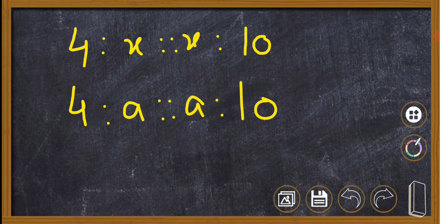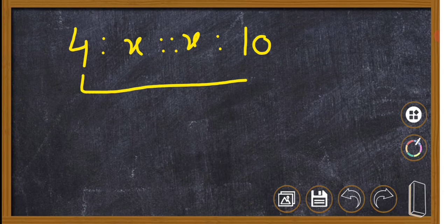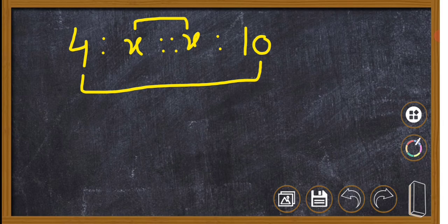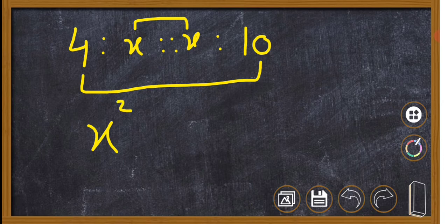If the mean proportion is a, b, c, the proportion would be a to b to c.